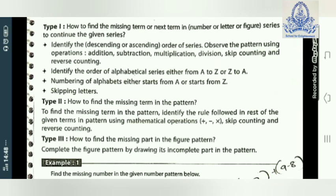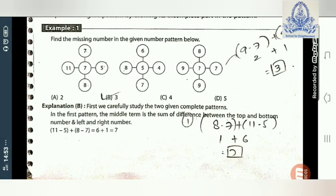Type 3: How to find the missing part in a figure pattern. Complete the figure pattern by drawing its missing part. In this type, we can also find the answer through different drawings — one drawing is given and another drawing is different, so we identify the pattern through figures.